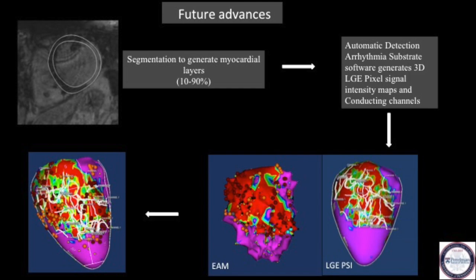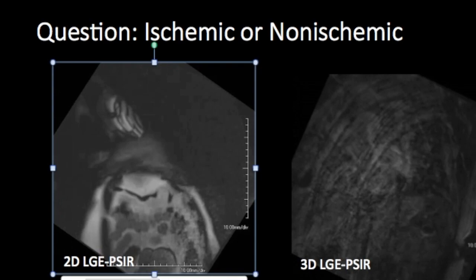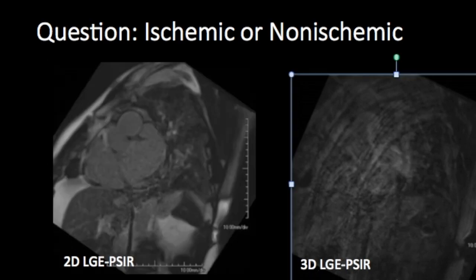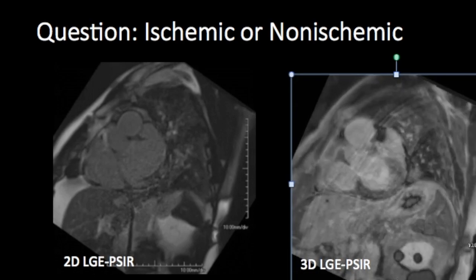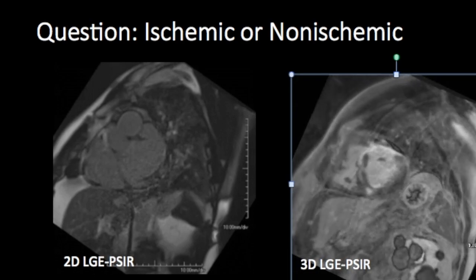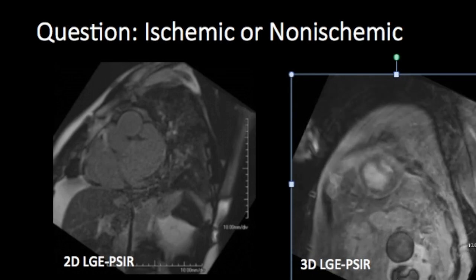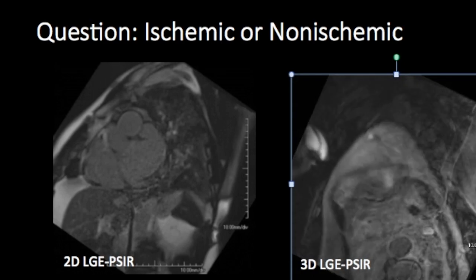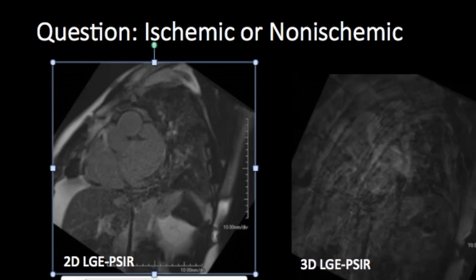Now, coming to the question of the day: I have 2D and 3D LGE PSIR sequences of the same patient, and you need to determine whether the patient has an ischemic or non-ischemic cardiomyopathy. Do comment in the comment section below, and I will reveal the answer in my next video. Thank you.